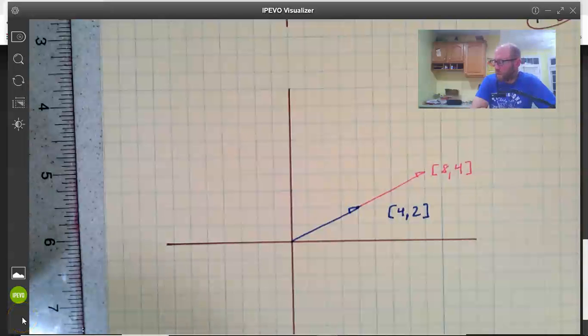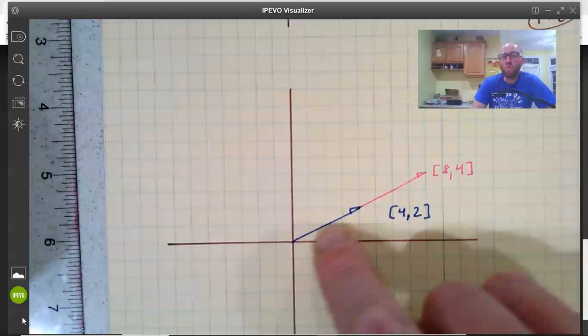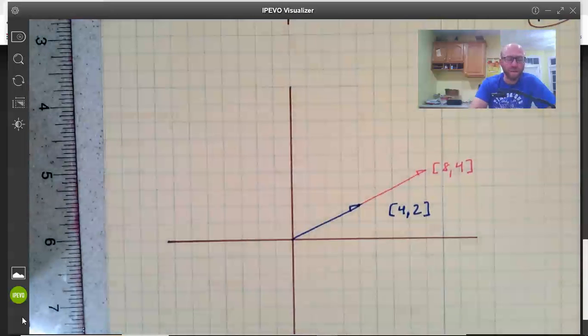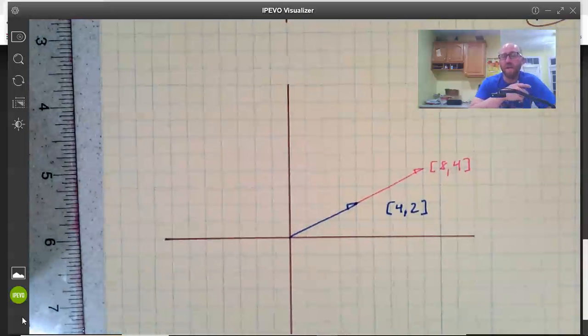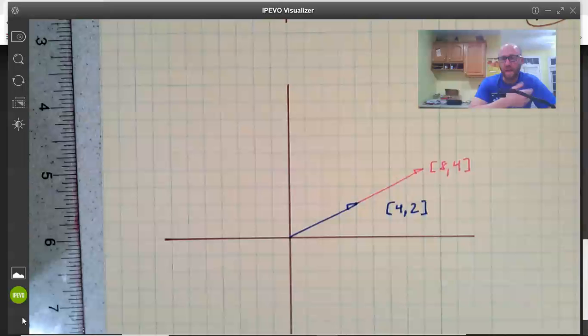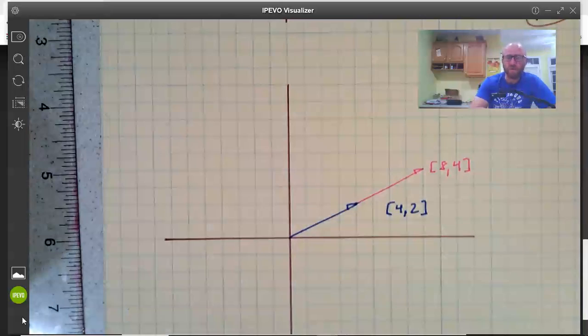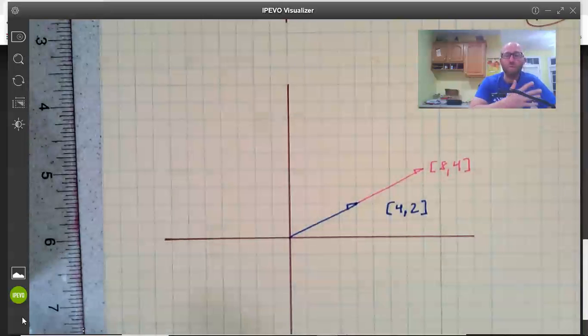Okay, so if we're talking about multiplying a vector by a scalar, remember a vector is something that has, it's a movement in the coordinate plane. I mean technically it is something that has both magnitude and direction. But for us magnitude is length and direction is just where we're going in the plane. It's a movement in the plane.